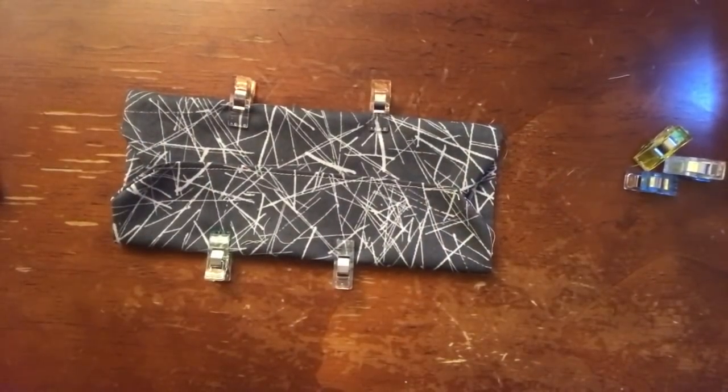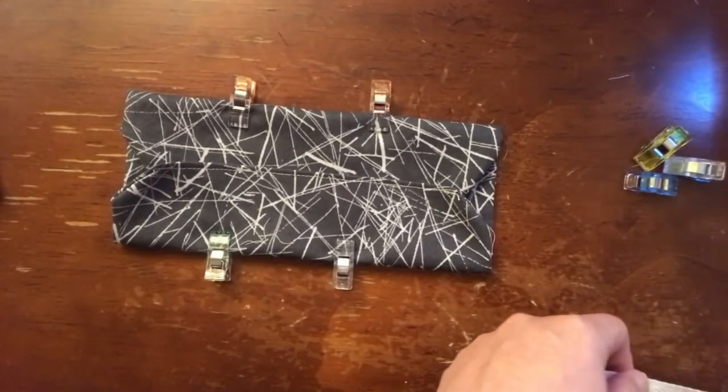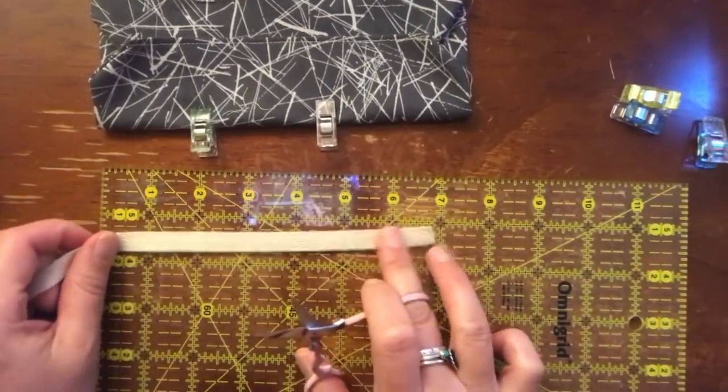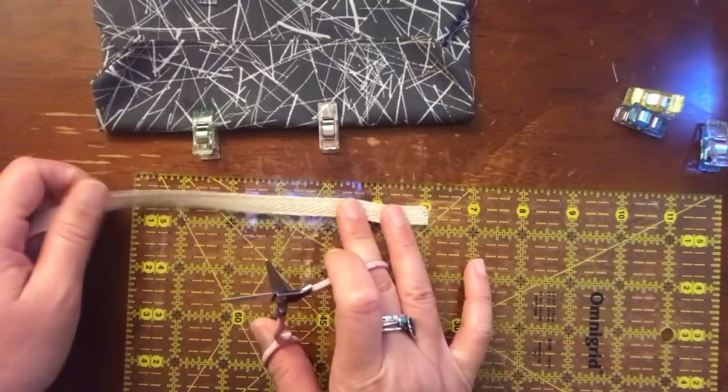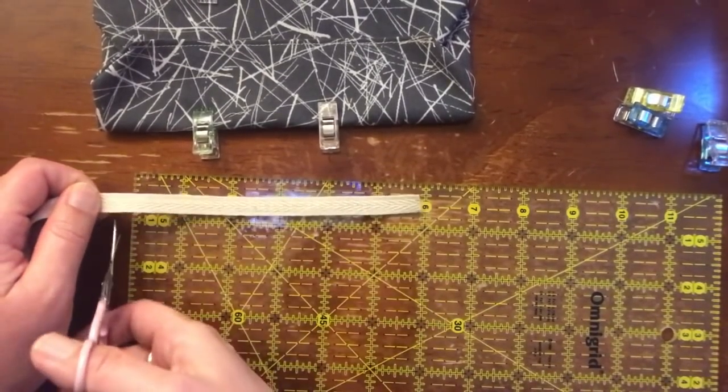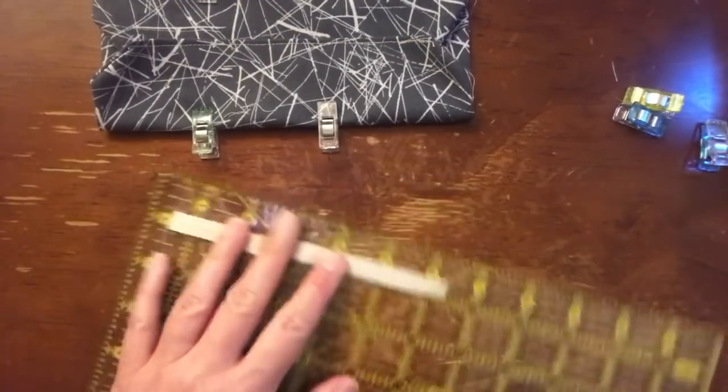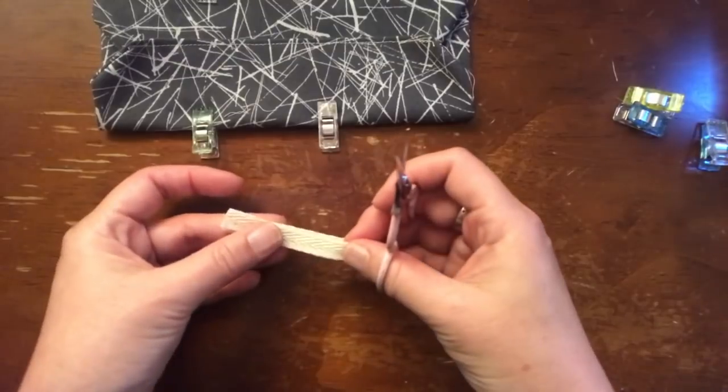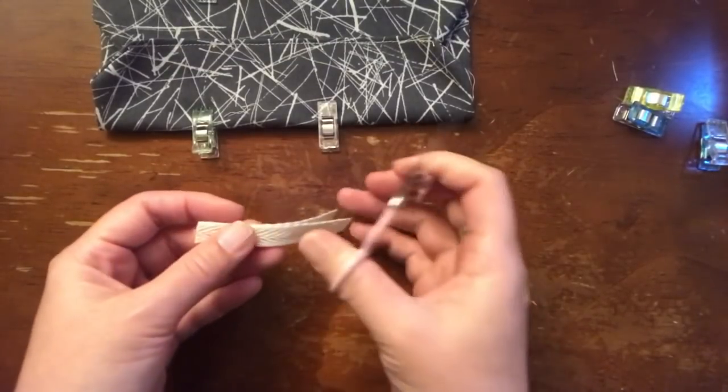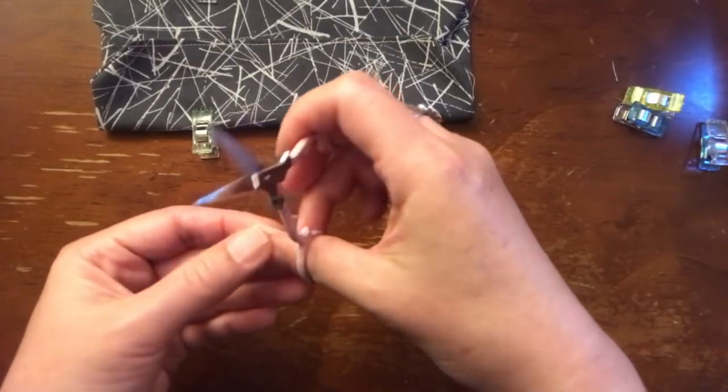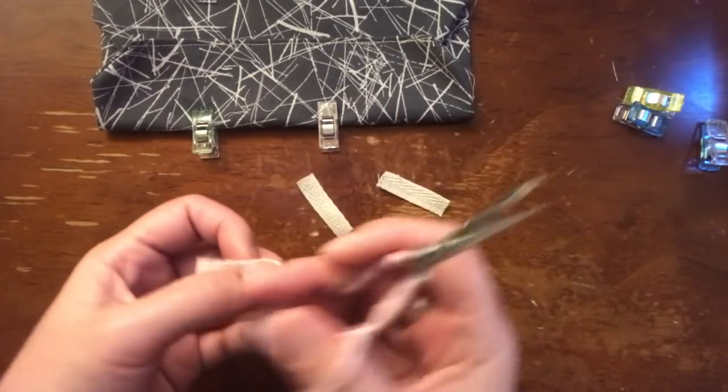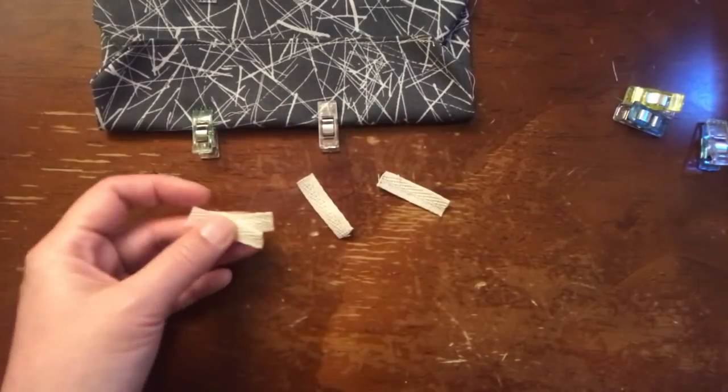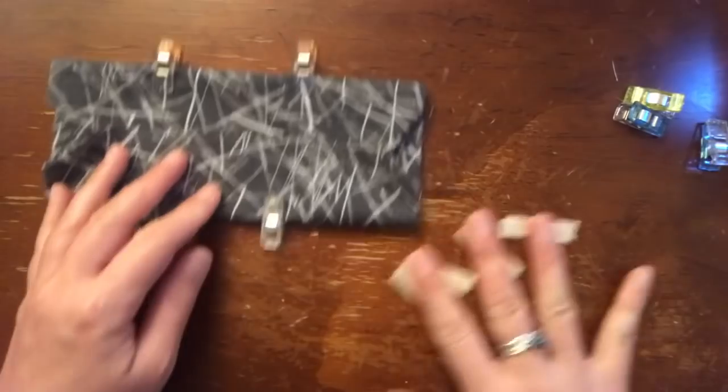Now we're going to be cutting the twill tape to make our tabs. What I do is I cut about 6 inches of twill tape. If you don't have twill tape, you can use ribbon or bias tape, store-bought bias tape, or you make your own bias tape. 6 inches. Fold it in half, cut it again. We'll make 4 tabs. These are 4 tabs.